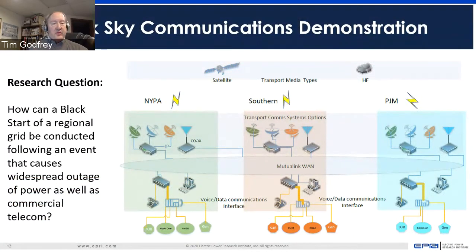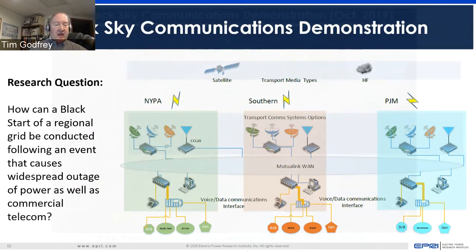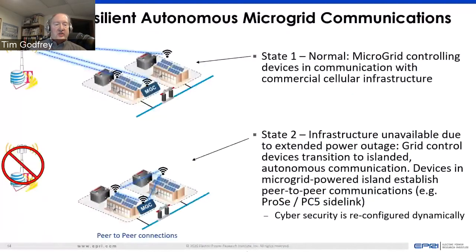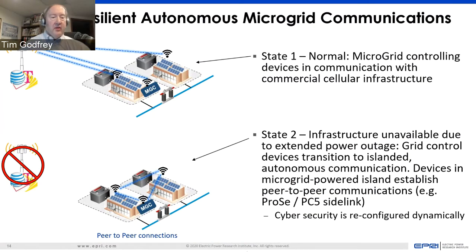We have a Black Sky communications project from last year that looks at communications for restoration during a widespread outage. This project investigated non-terrestrial systems including satellite and HF radio over a wide area. We're also speaking to the fourth area: resilient microgrid communications, which takes advantage of peer-to-peer communications on LTE such as ProSe and PC5 Sidelink to allow communications supporting a microgrid — which provides power locally in case of a broader outage — to also transition to a localized autonomous area. Hopefully these ideas will stimulate your questions and thoughts.